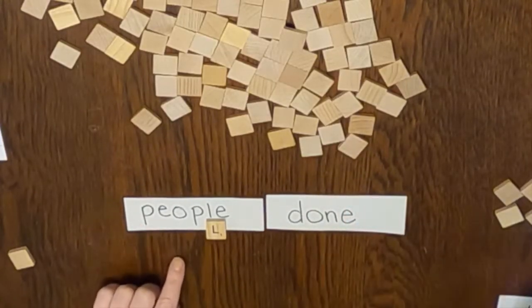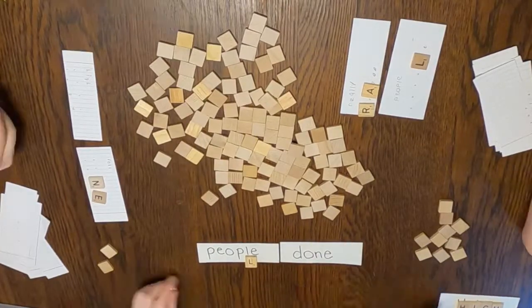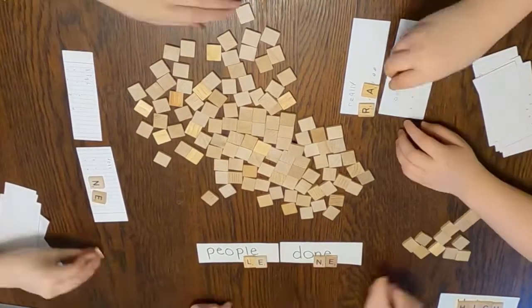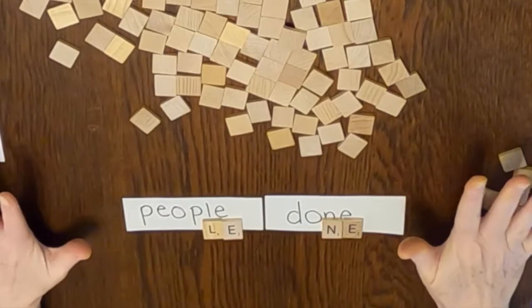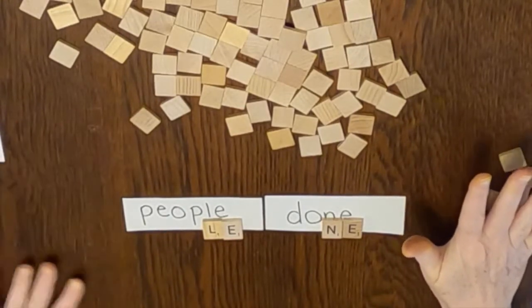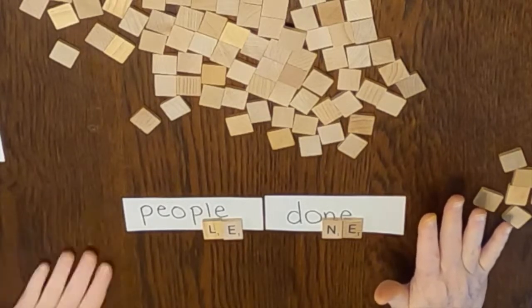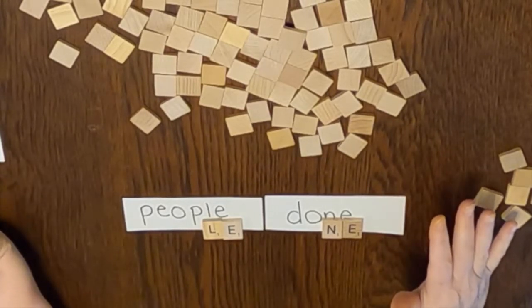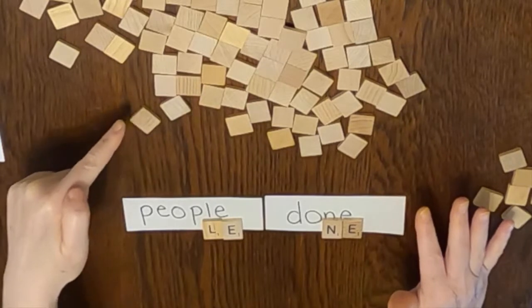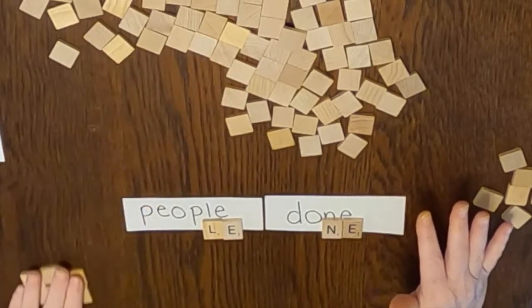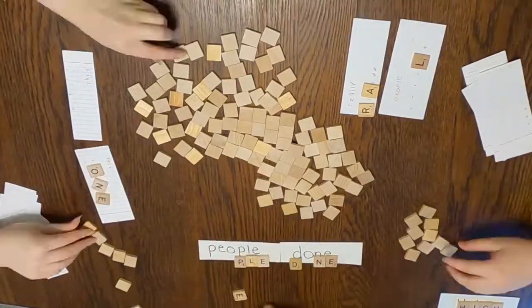Gameplay will continue in this way until you run out of tiles to the side. Now if you get to a point where you run out of the letter tiles that your partner has been sliding over to you, then you reach up and you pull from the center pool of tiles so that you've got enough tiles to pull from off to the side and then you just keep playing.